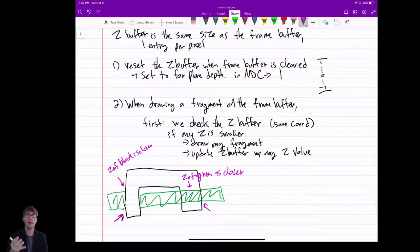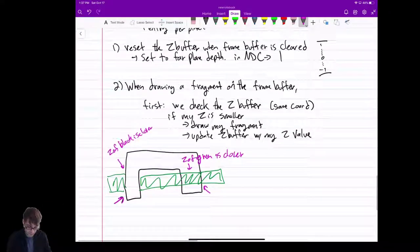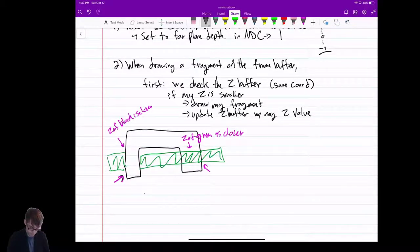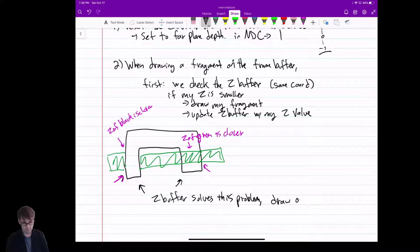And here, the Z of the black is closer. So when you're drawing the green, if the black is already there, you skip those pixels. When you're drawing the black, even if the green is already there, you overwrite it because the black's in front. So the Z Buffer solves this problem. And then the draw order does not matter.